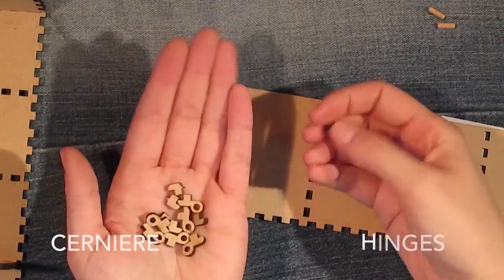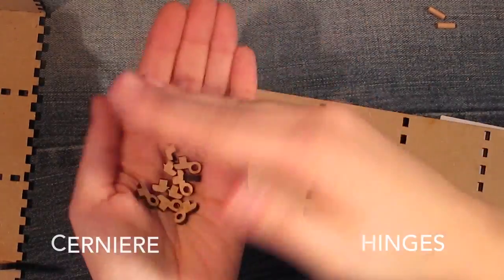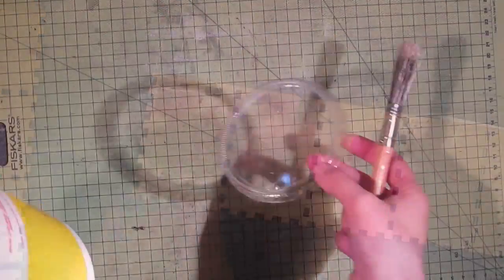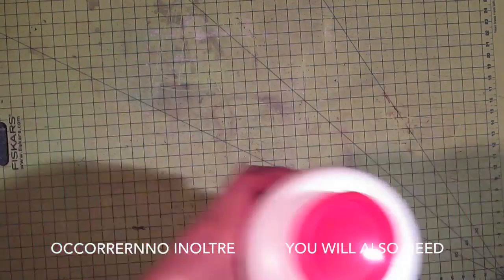You will also receive these little pieces of wood which are the hinges. Other things you will need are white glue, a brush and a plastic lid.